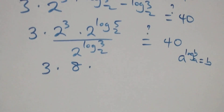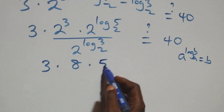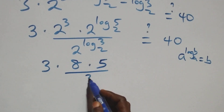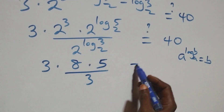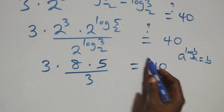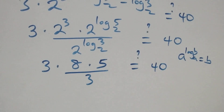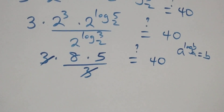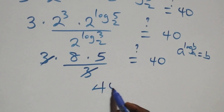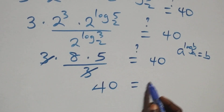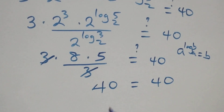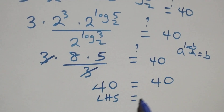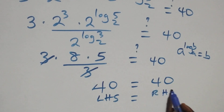The terms simplify: 2 raised to power log₂5 equals 5, and 2 raised to power log₂3 equals 3. So we have 3 times 8 times 5 over 3, equals 40. The 3s cancel each other, giving 8 times 5, which is 40, equals 40. The left-hand side equals the right-hand side.